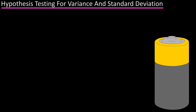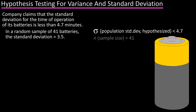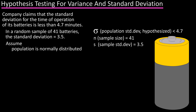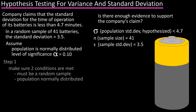A company that produces rechargeable batteries claims that the standard deviation of the lengths of times of operation for their batteries is less than 4.7 minutes. A random sample of 41 batteries has a standard deviation of 3.5 minutes. Assume the population is normally distributed. At a level of significance of alpha equals 0.10, is there enough evidence to support the company's claim? Step one: it is stated that the sample is a random sample and the population is normally distributed, so both conditions are met.